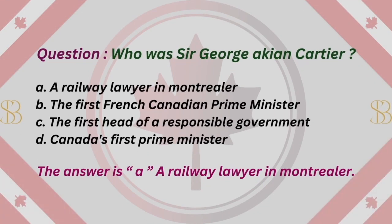Question: Who was Sir George-Étienne Cartier? A. A railway lawyer in Montreal. B. The first French-Canadian Prime Minister. C. The first head of a responsible government. D. Canada's first Prime Minister. The answer is A. A railway lawyer in Montreal.